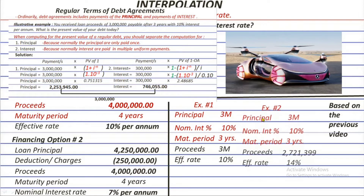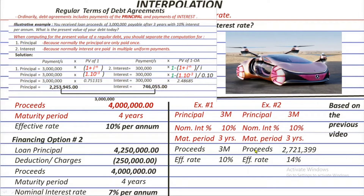In example number 2, everything was the same except the proceeds received by the debtor was lesser than the principal — specifically 2,721,399 only. That is why the effective interest rate is higher than the nominal rate. The debtor suffers paying interest of 10% based on the 3 million principal, not based on what was actually received, which was only about 2.7 million. The debtor also suffered from advance deductions.